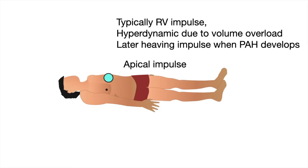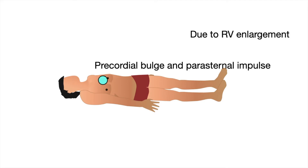We typically feel a right ventricular impulse for the apex beat, which could be hyperdynamic due to volume overload, or later a heaving impulse when pulmonary artery hypertension develops. A precordial bulge and a parasternal impulse is due to right ventricular enlargement.